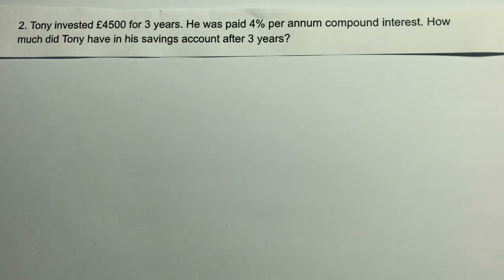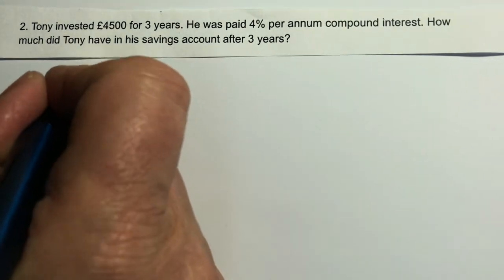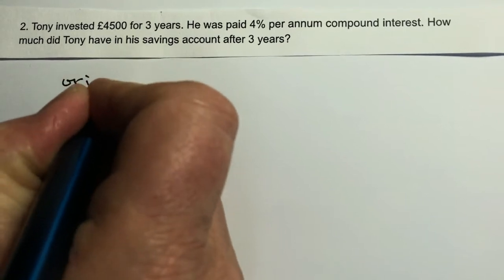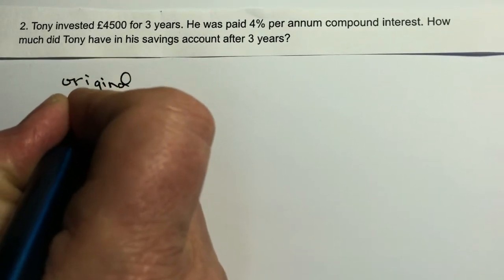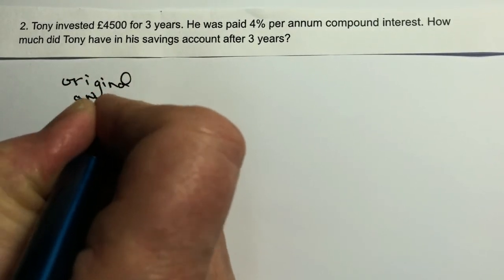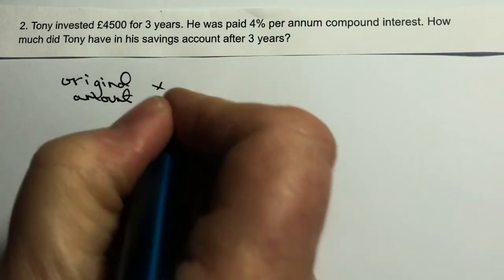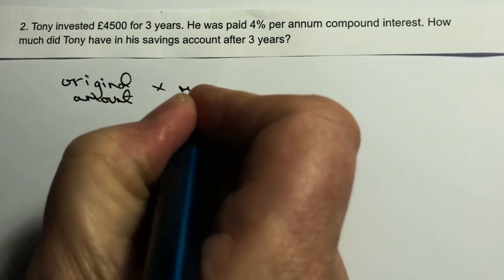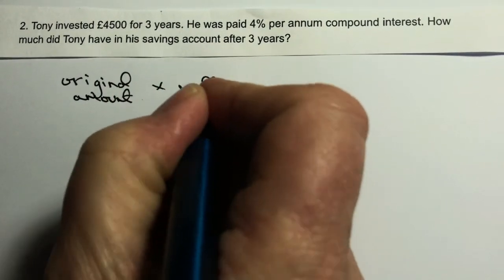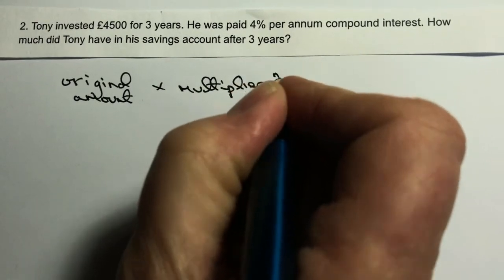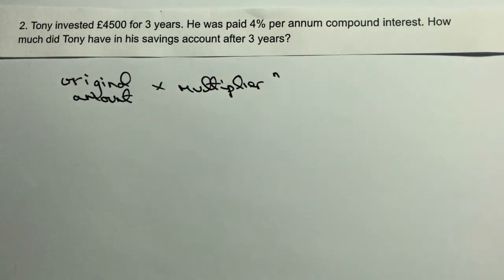The formula that we're going to use is: original amount — which we know in this particular case is going to be 4,500 — and we're going to multiply that by the multiplier to the power of n, which is the number of years.